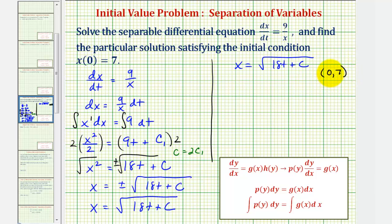To solve for c we'll substitute 0 for t and 7 for x. So we'd have 7 equals, and now if t is 0, 18t would be 0 so we would have just the square root of c. And now we'll square both sides of the equation to solve for c. So we have 49 equals c.